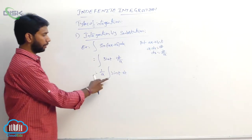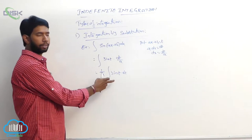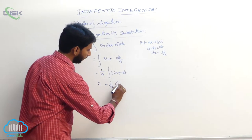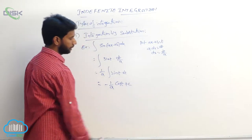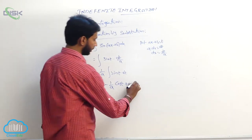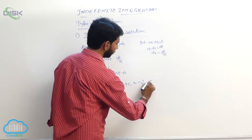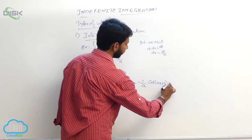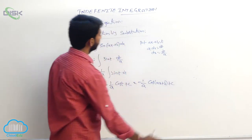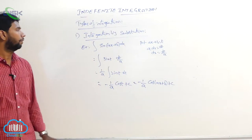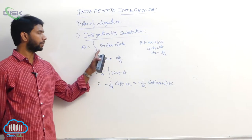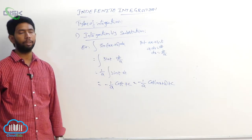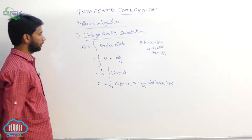Substituting back, the answer is minus (1/a) cos(ax + b) plus constant. So the formula: integral of sin(ax + b) dx equals minus (1/a) cos(ax + b) plus constant.